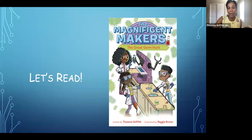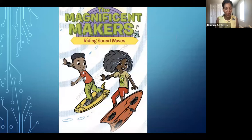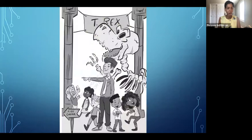So without further ado, we will get into the reading of Magnificent Makers, number three, Riding Sound Waves. Ready? Here we go. Roar! Growled Violet. She held up her hands imitating the towering T-Rex standing in the middle of the museum lobby. Henry jumped. Hey, don't do that, he frowned. You scared me.